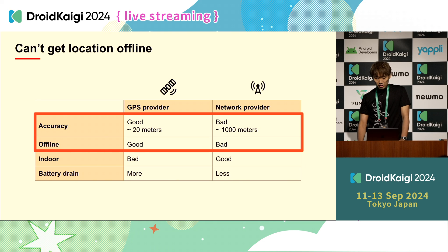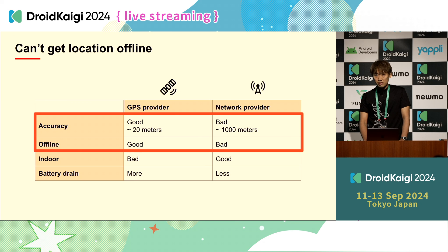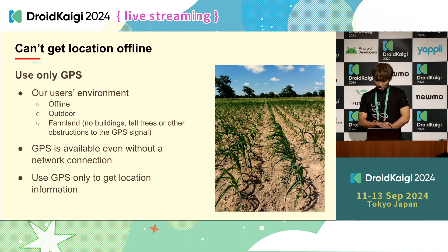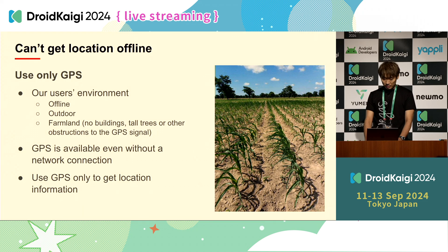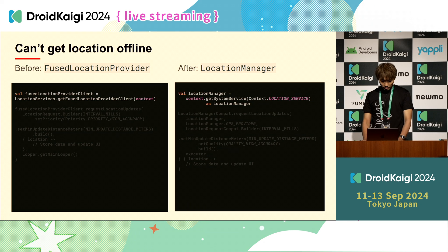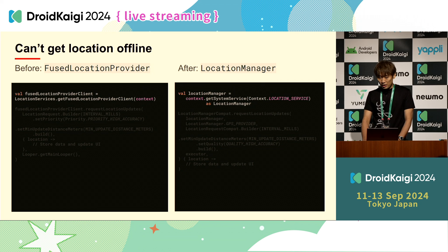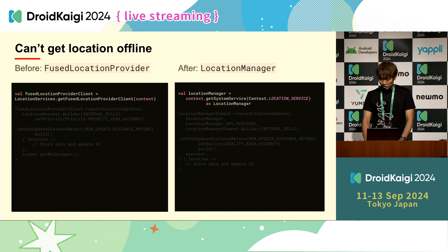Focusing on the key advantage: GPS has the edge for high accuracy and offline use in farm mapping. For farm mapping used offline outdoors, we tried using only GPS because our users' environment is offline, outdoors, on farmland with no buildings. GPS is available in offline environments, and we considered it would be effective in many cases in this environment. Since it's not possible to specify a specific location provider like GPS with Fused Location Provider, we decided to use the older API LocationManager.